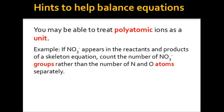Here are some hints to help while balancing chemical equations. You may treat a polyatomic ion as a unit. For example, if nitrate ions (NO₃⁻) appear in both the reactant and the product of the skeleton equation, count the number of NO₃⁻ groups rather than counting nitrogen and oxygen atoms separately.